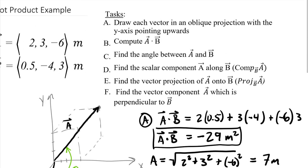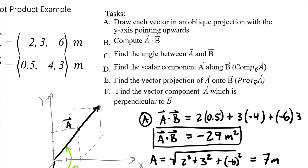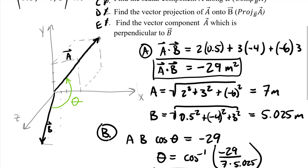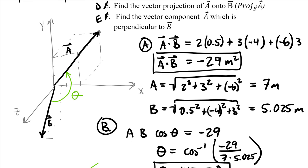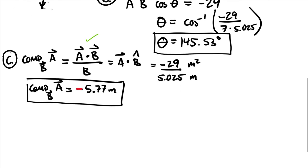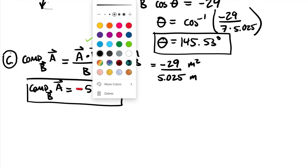I just realized I was off by one in my letter labeling, so let me re-letter these for clarity: the dot product is part A, the angle is part B, the scalar component we just found is part C, and we're moving on to parts D and E. Sorry for the shift in the drawing.